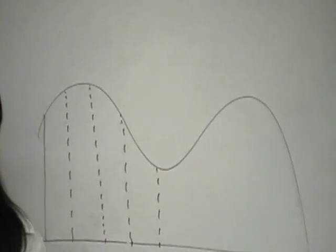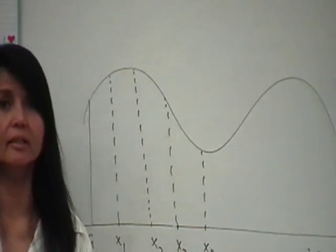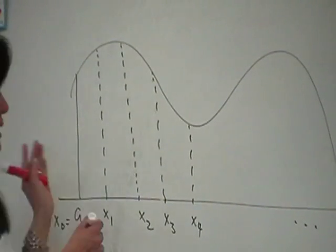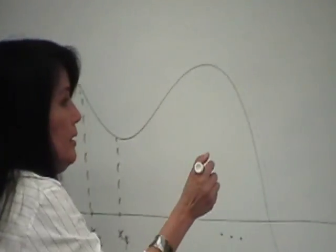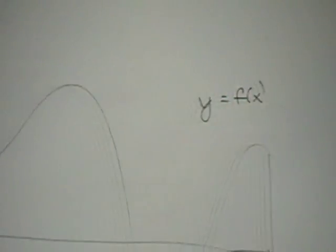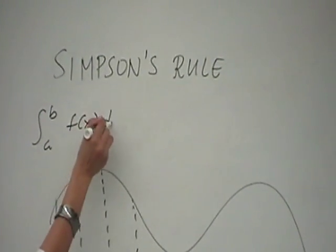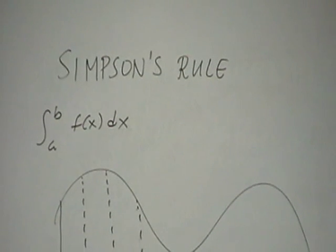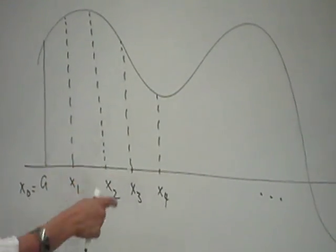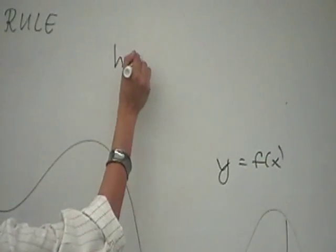The next numerical integration technique is Simpson's Rule. If we have any general function y equals f of x, and we want to find the definite integral from a to b of f of x dx, just like the trapezoidal rule, let's make our lives simple by using regular partitions of intervals of equal length, which we call h.